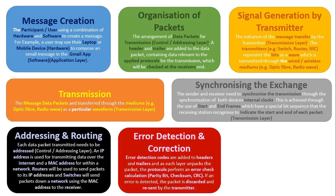Next, we have error detection and correction. The protocol is checked on the receiver's end. Error detection codes are added to the headers and trailers, and as each layer unpacks the data, the protocols perform an error check calculation. The three methods covered in this unit are Parity Bit, Checksum, and CRC. If an error is detected — for example, the checksum produces a different value — the packet is discarded and a signal is sent back to the sender to retransmit that message.